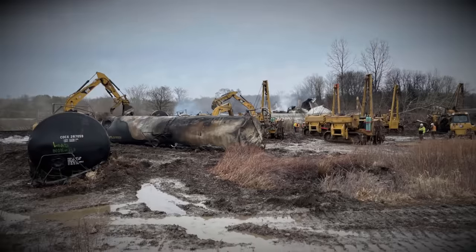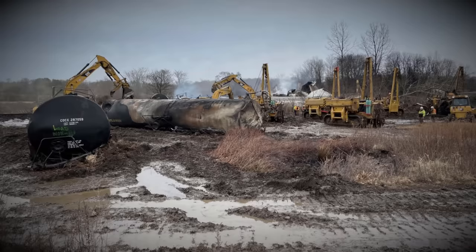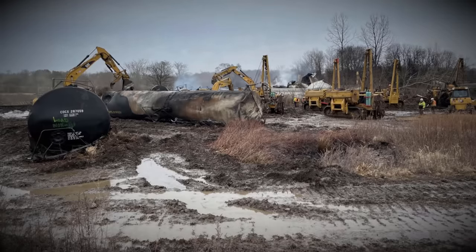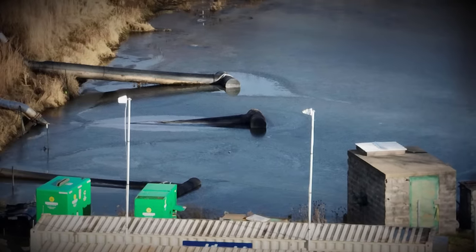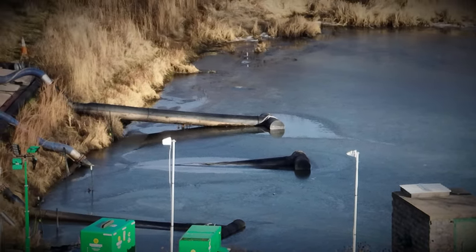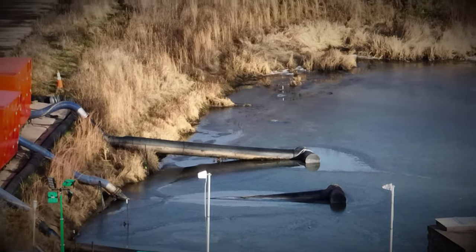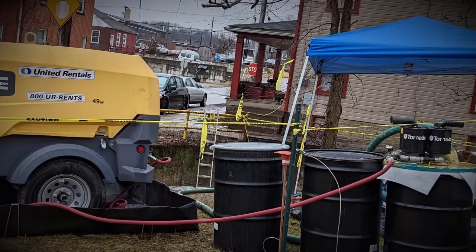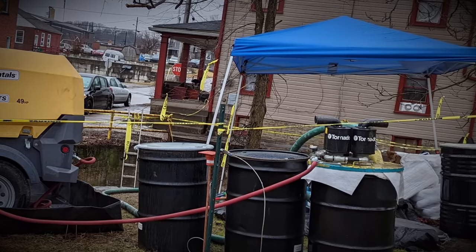By the 8th of February, the disaster had killed an estimated 3,500 small fish across 7.5 miles of streams in the nearby area. The number would increase with by the end of February, an estimated 43,000 fish, crustaceans and amphibians, as well as other marine animals were killed. Up to 10 miles away from the disaster site, locals would report that their small pets were dying around the 6th and 7th of February.